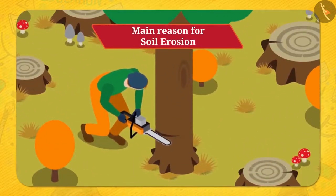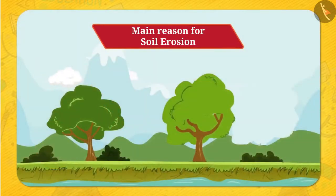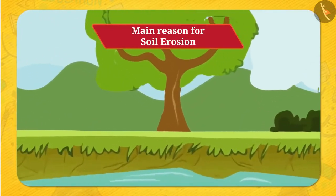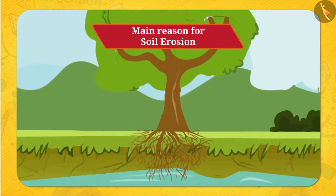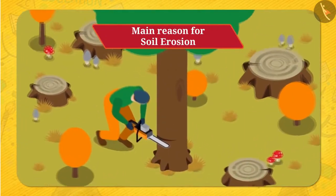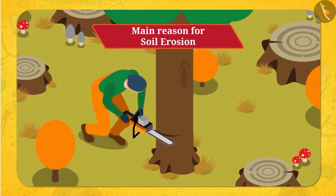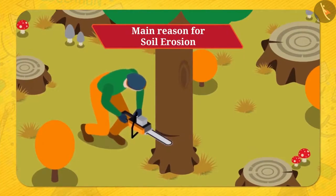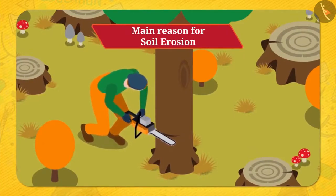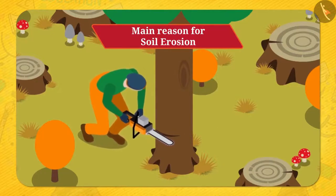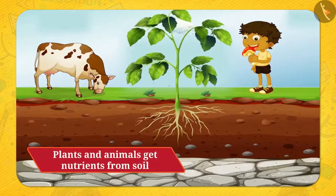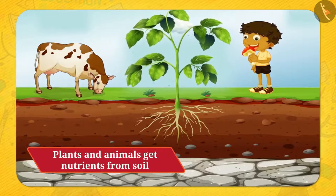The main reason for soil erosion is deforestation. The roots of the trees hold the soil tightly and protect it from being washed away. If the trees are cut down, there will be no roots to hold the soil tightly, and it will get easily washed away, leading to soil erosion.